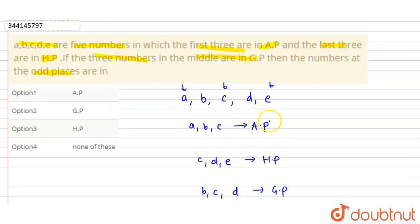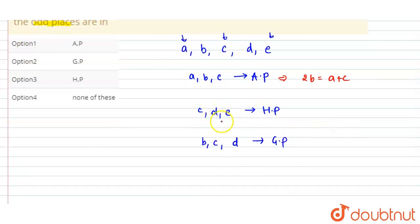Let's see. When the numbers are in AP what happens? 2B will be equal to A plus C. And when we are in HP, what happens? HP means that if this is in HP, then 1/C, 1/D, and 1/E, what happens? They will be in AP. So what is this? Common difference.